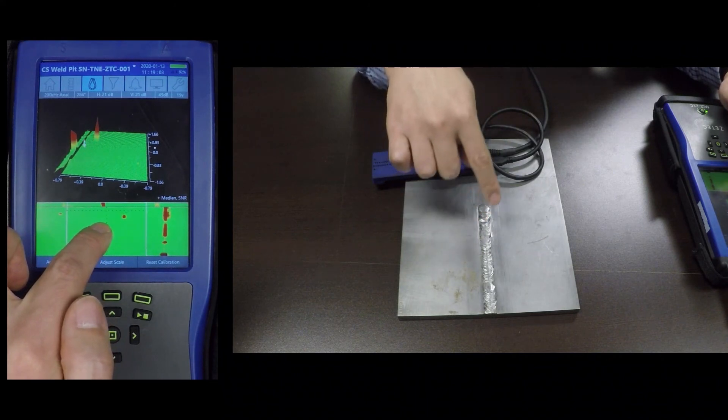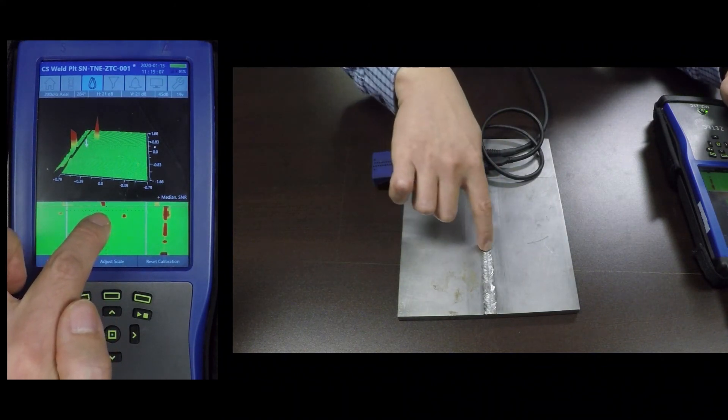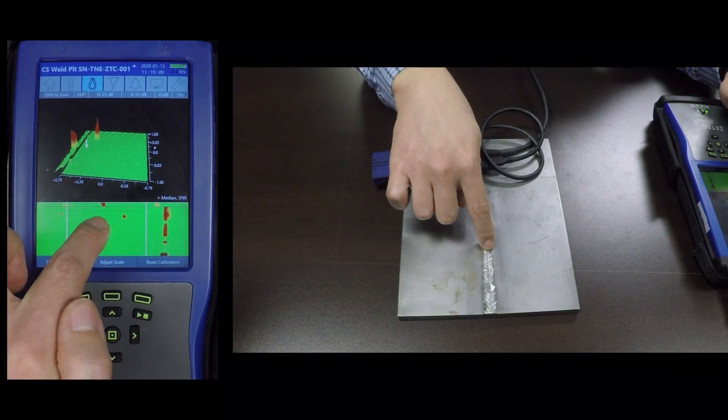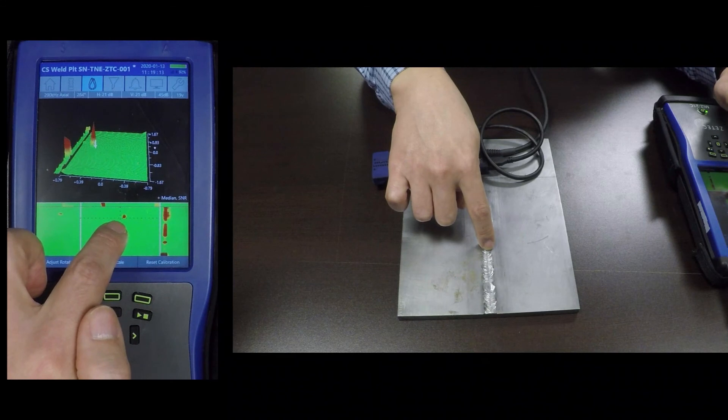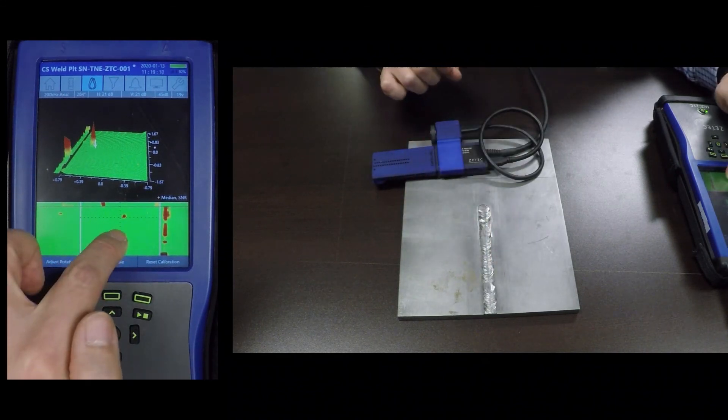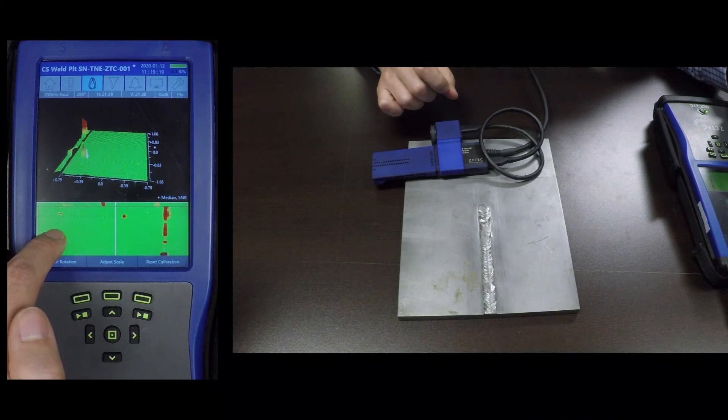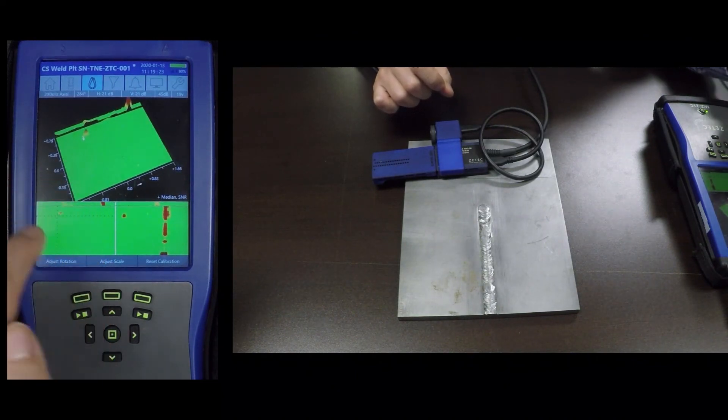My plus point coil is picking out the axial notch in the toe area. And then the array channels are picking out the axial notch in the heat affected zone, and then also the 45 degree notch in the heat affected zone right there.